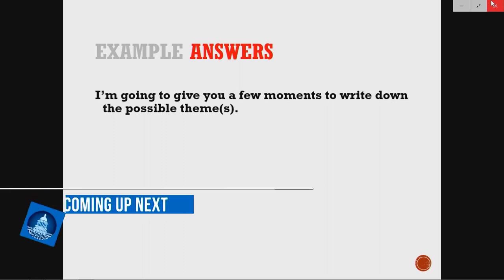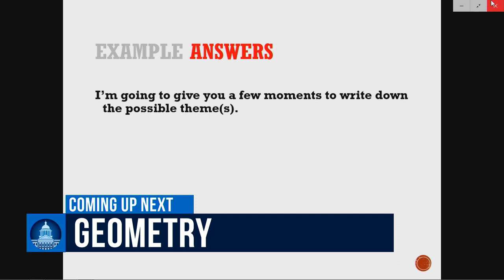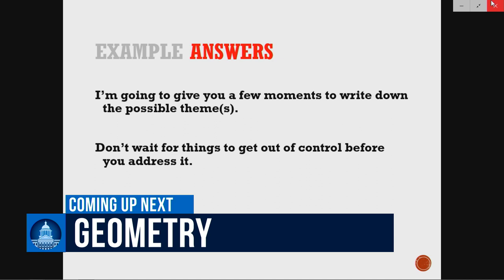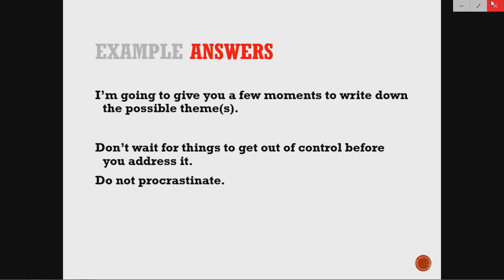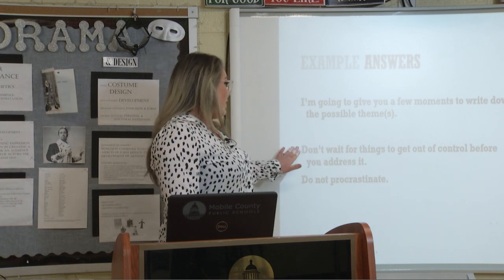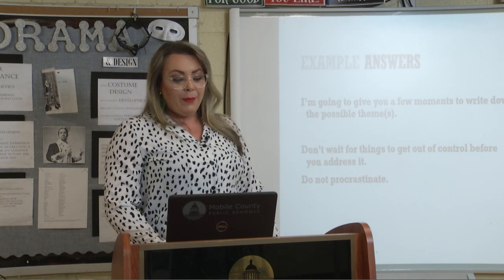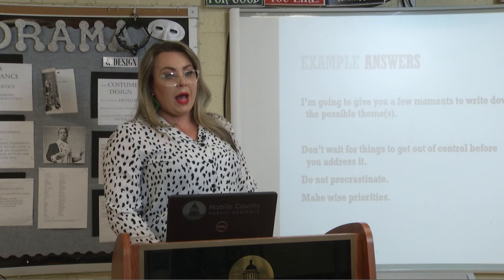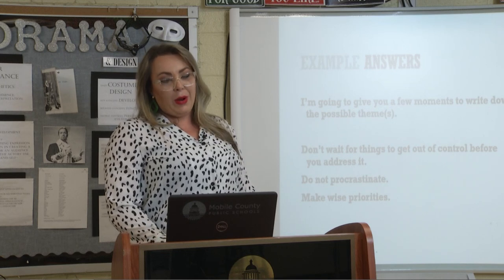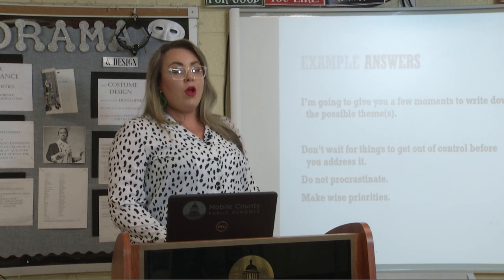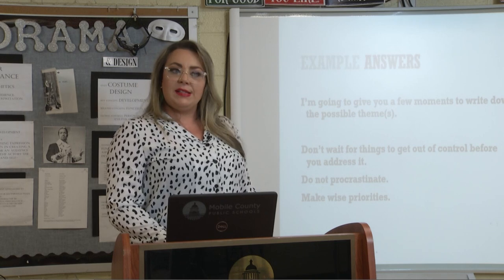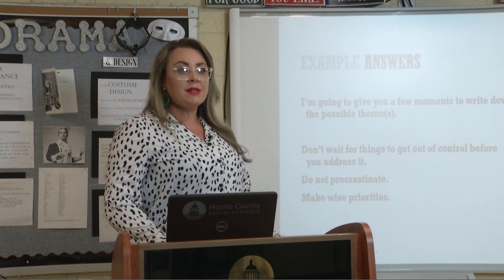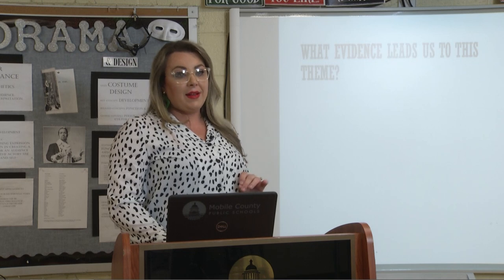Hopefully I've given you enough time to jot something down. Don't get discouraged if your themes don't line up word for word — they're all interpreted a little bit differently. One possible theme could be: don't wait for things to get out of control before you address it. If he would have listened about the complaints in the beginning, he wouldn't have had the issue he had towards the end. Another theme could be: do not procrastinate. Notice that these have similarities — waiting too long and procrastinating is basically the same thing. Sometimes when you procrastinate, you put things off to the last minute and it can be too late. Another option could be: make wise priorities. Our character here is prioritized with other things than fixing his roof — he's more concerned with watching a game than fixing the roof above his family's head.